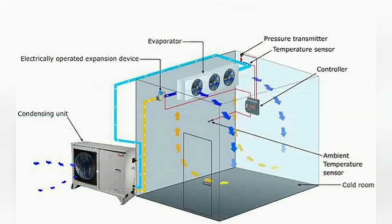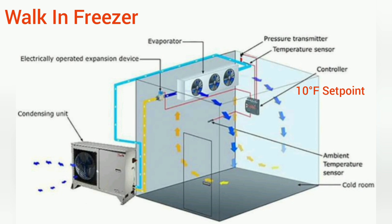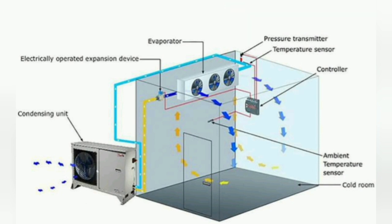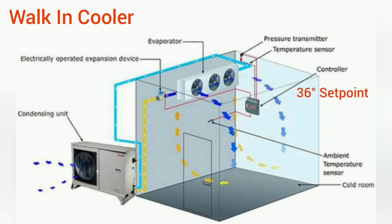Here's an example: if the walk-in freezer needs to be at 10 degrees Fahrenheit, the evaporator temperature needs to be zero degrees Fahrenheit in order for the system to reach that set point of 10 degrees. And vice versa for a walk-in cooler — if the walk-in cooler needs to be 36 degrees, the evaporator temperature needs to be 26 degrees. There needs to be a difference in temperature in order for the case to pull down.